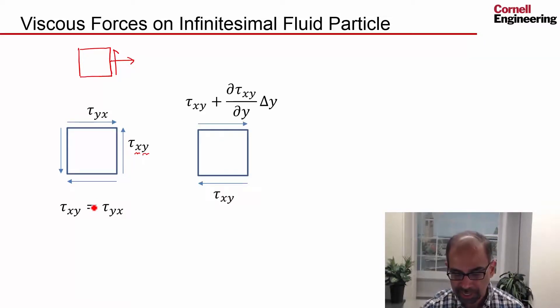And then to look at the net shear force in the x direction, you do the same business. So let's say it's tau xy, and since the normal is pointing in the negative y direction, then the direction of the positive shear is in the negative x direction. And then there's a shear over here, which is in the other direction, it's slightly different. It's the same business again, and it's different by the gradient in the y direction times this distance here.